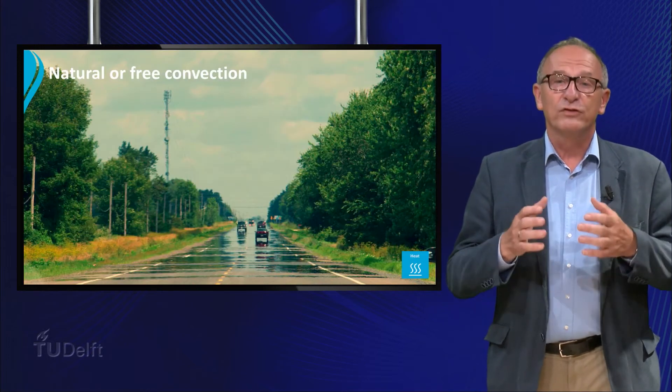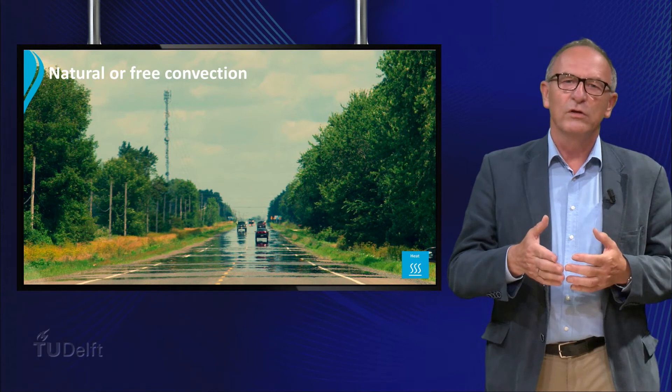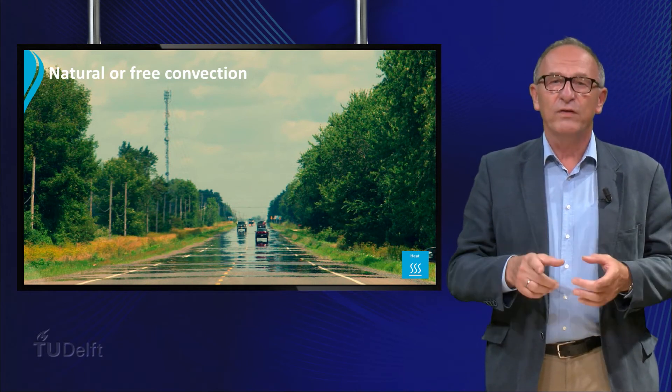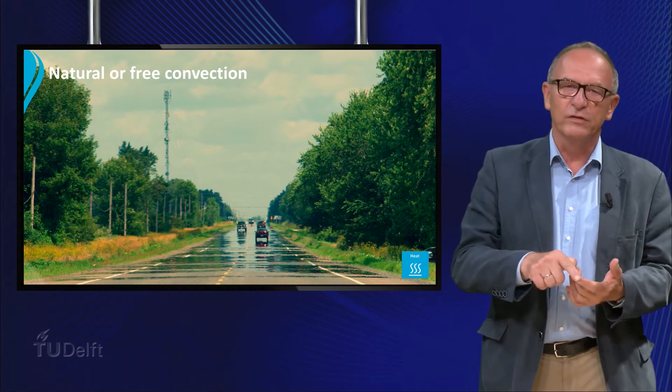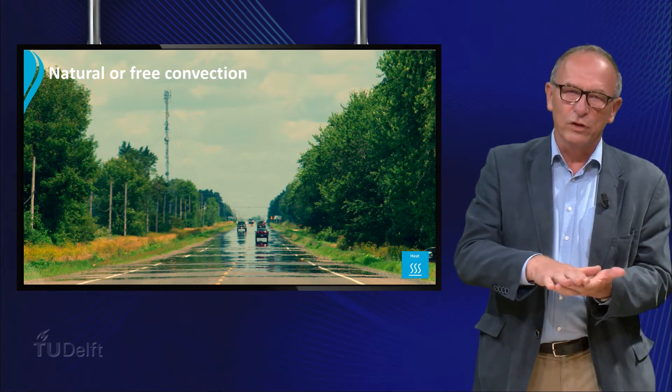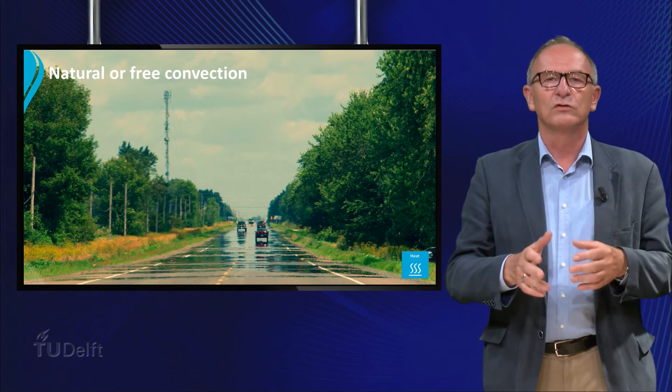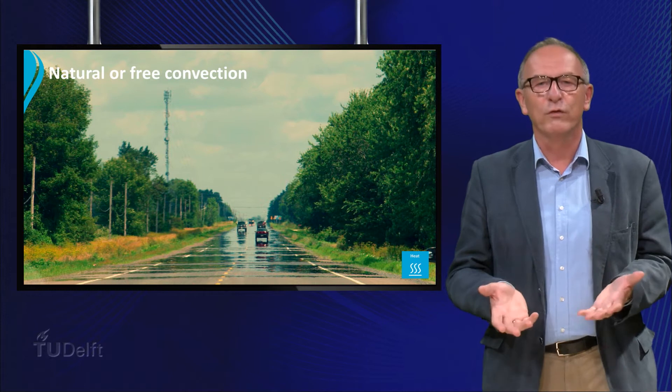For example, if the sun is shining on a road, you see the air rising above the surface. The driving force here is the density difference between the hot air at the surface of the road and the air above the road. This type of convection is called natural or free convection.